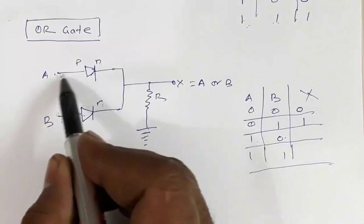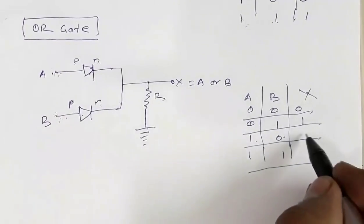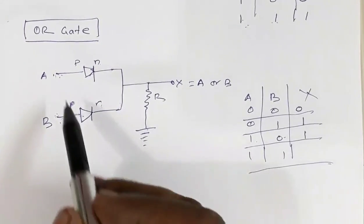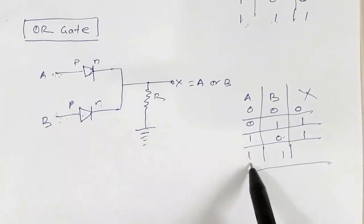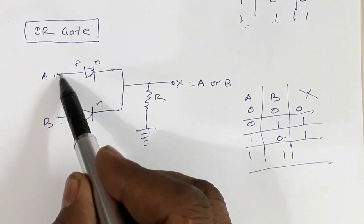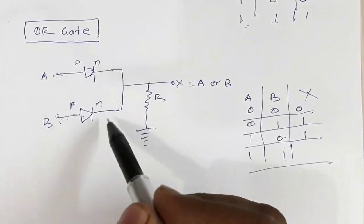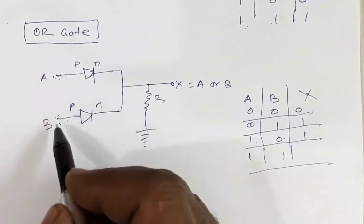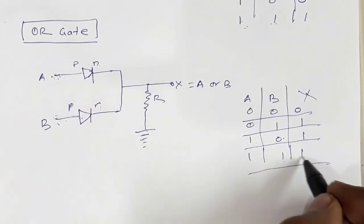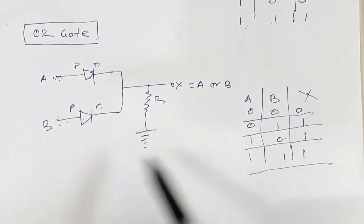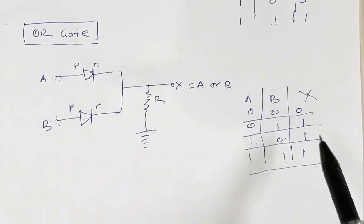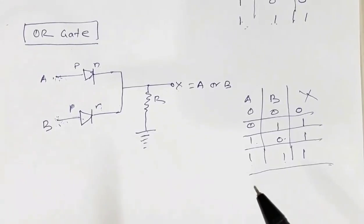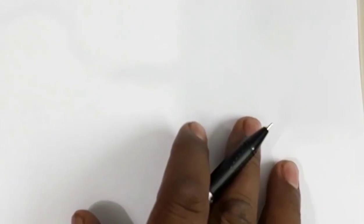If both inputs are high — one and one — both diodes are forward biased, so the output potential at X is equal to potential at A or potential at B, giving output one. Basically in the OR gate, if any one of the inputs is high the output is also high. This is the realization of the OR gate using diodes.